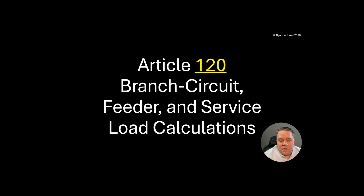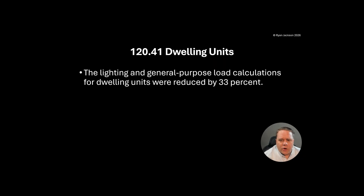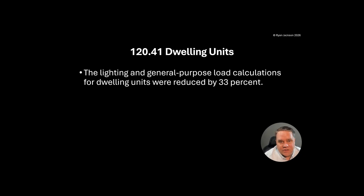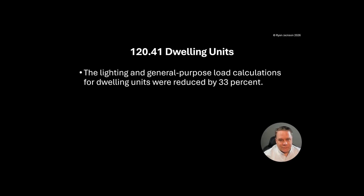Article 120 covers branch circuit, feeder, and service load calculations. We're going to go in reverse order — we'll talk about 120.13, but we've got to talk about 120.41 first. Otherwise the change to 120.13 is not going to make any sense. So here's the deal: the lighting and general purpose load calculations for dwelling units were reduced by 33%.